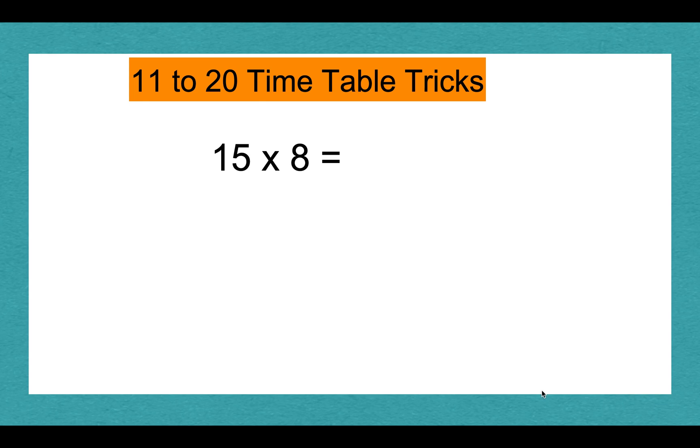15 times 8 is first. Circle 15 and split it between the 10 and 1s place. That is 10 and 5. Then we're going to put multiplication symbols next to each of them. Since 8 is the other number, we're going to multiply both of them by 8.